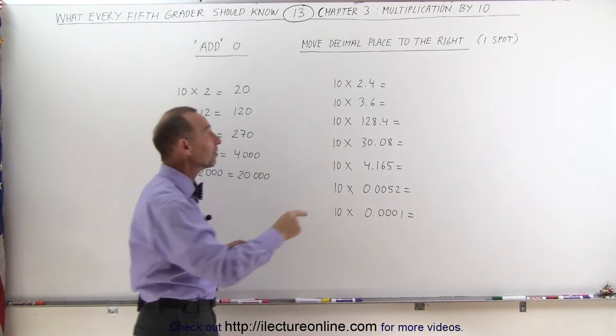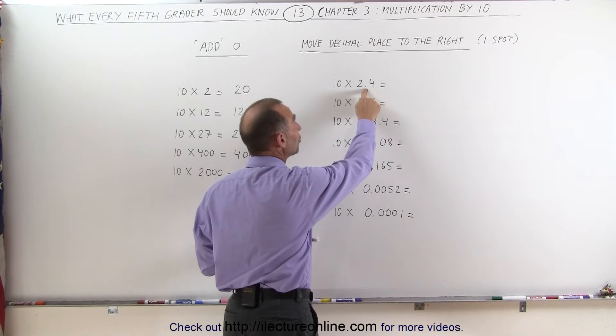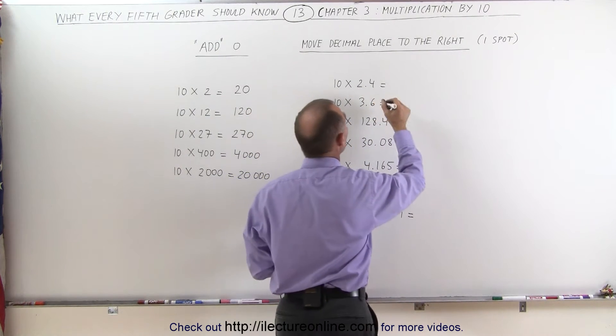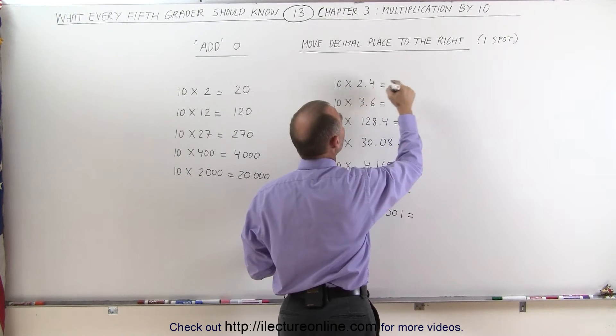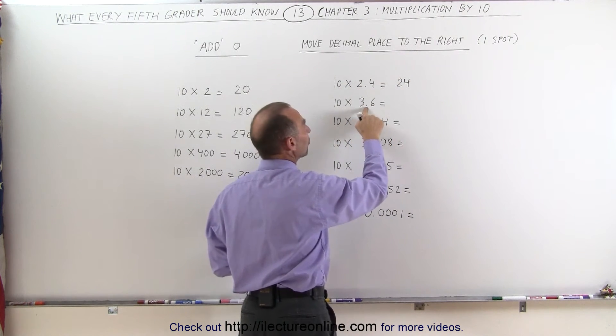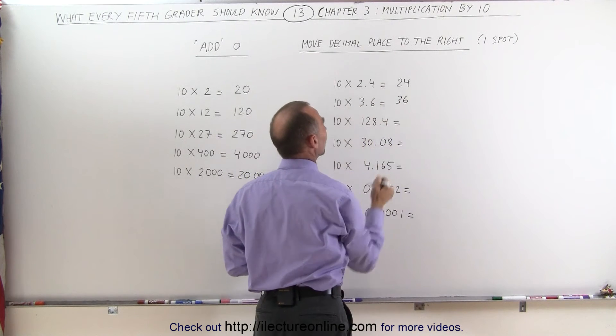Or, if the number has a decimal place like this, then you move the decimal place over one spot. 10 times 2.4, move the decimal place over one, and you get 24. 10 times 3.6, move the decimal place over one, you get 36.